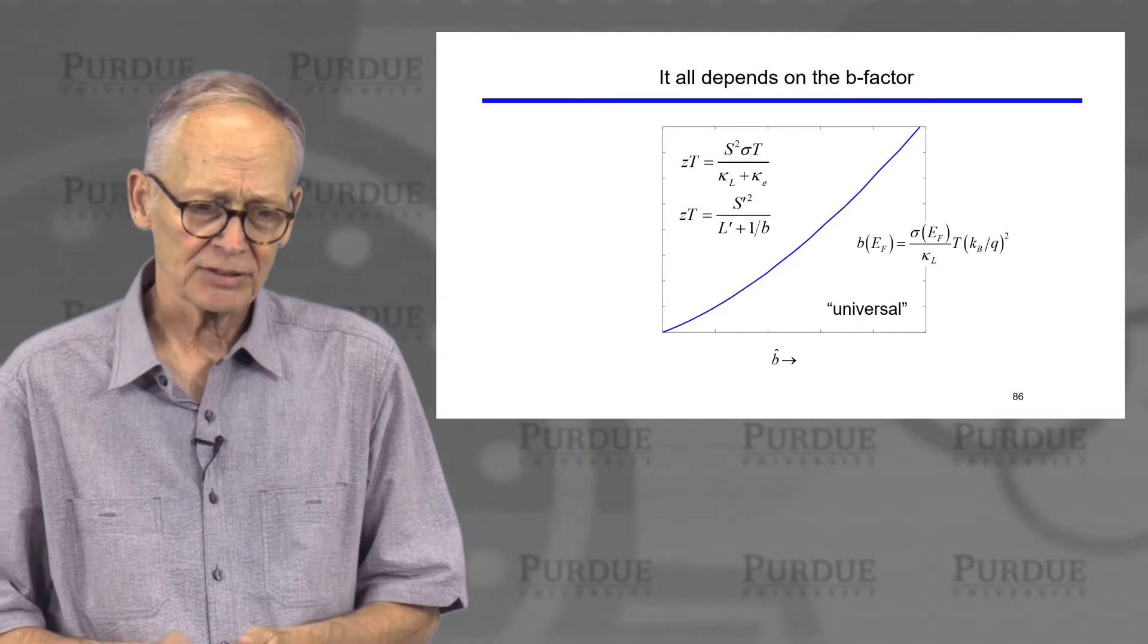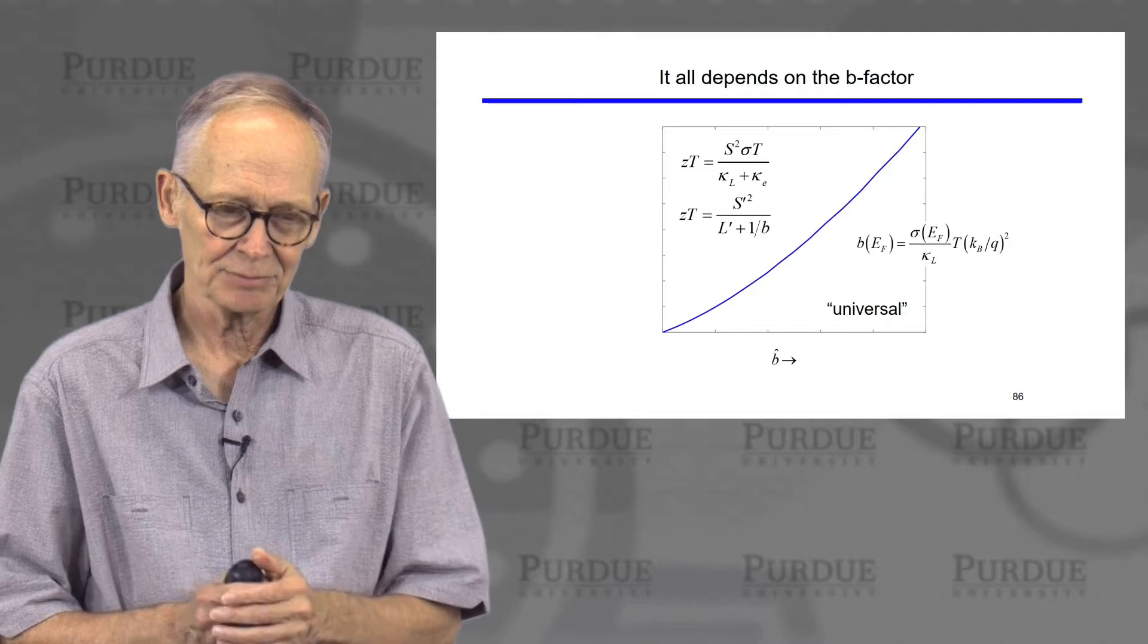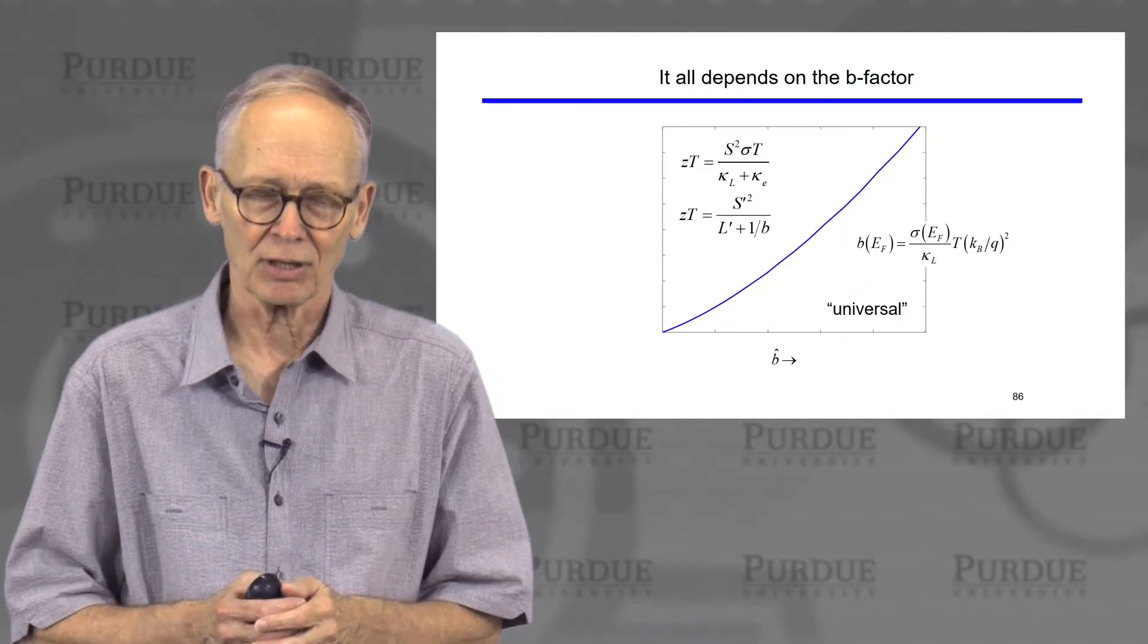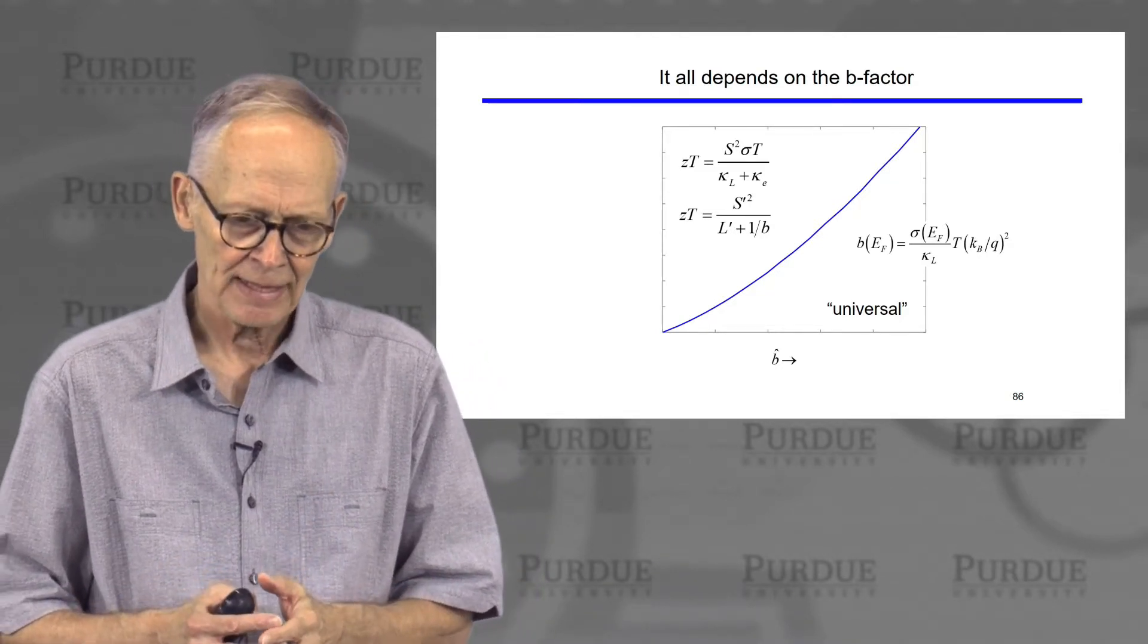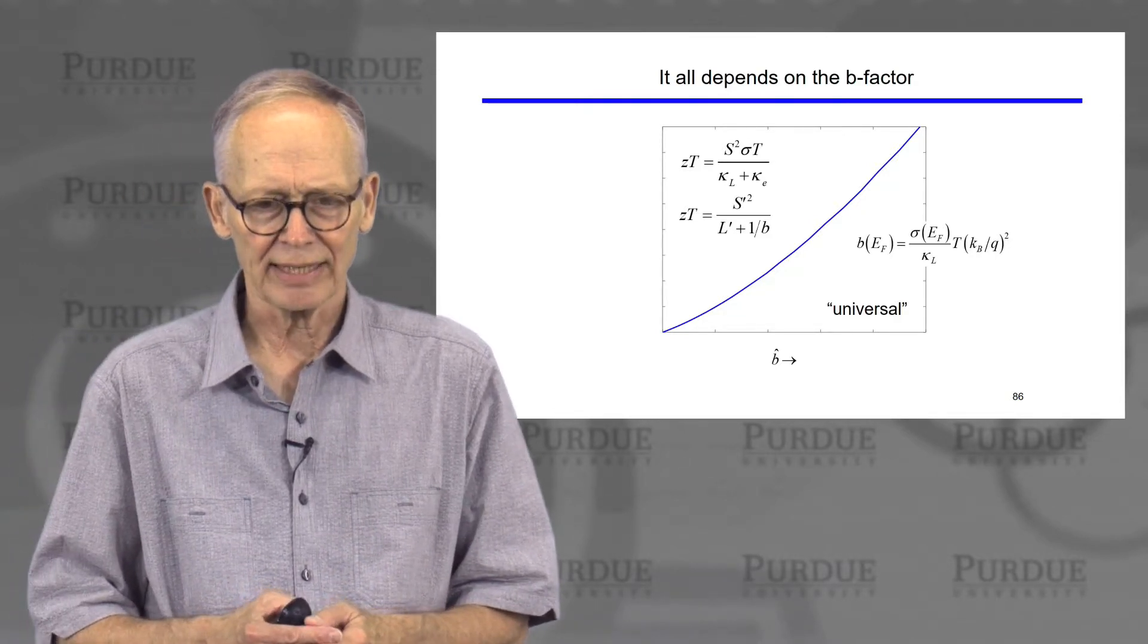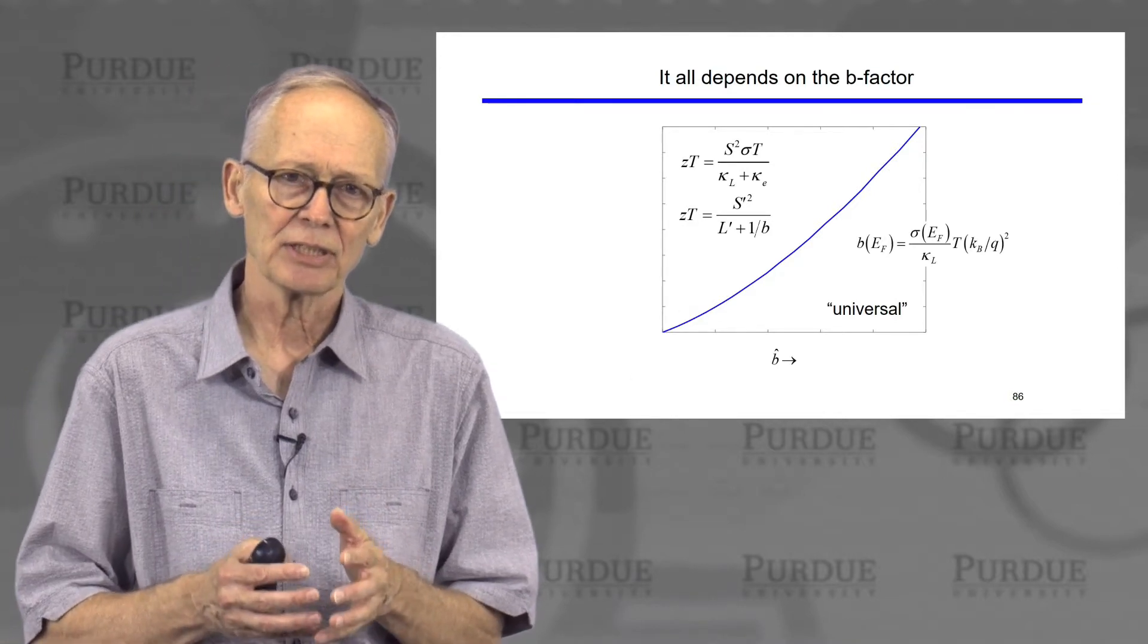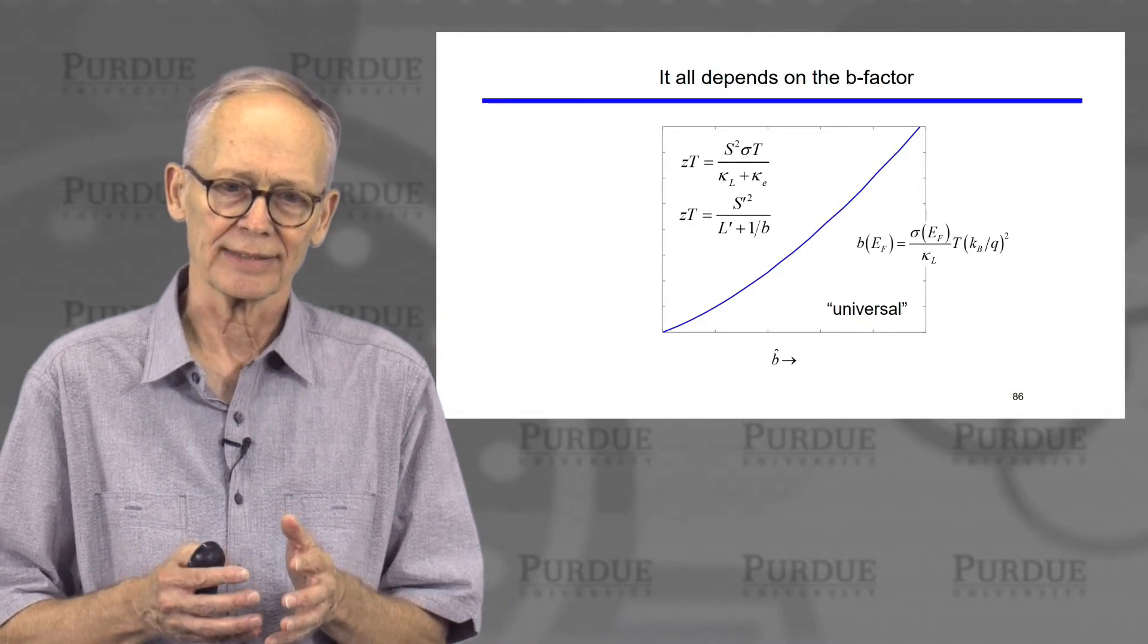So in pulling this all together, in trying to maximize the figure of merit ZT, there are several parameters involved and it can get complicated. But we presented some results that showed that in practice, for a wide variety of band structures, it seems that the figure of merit only depends on two quantities.